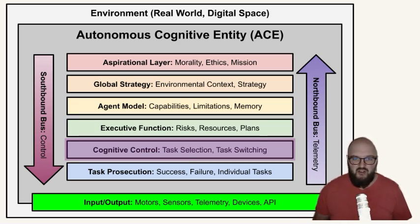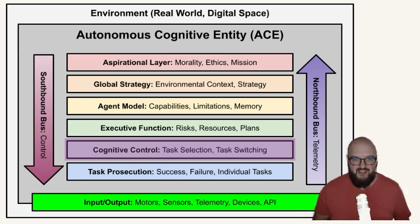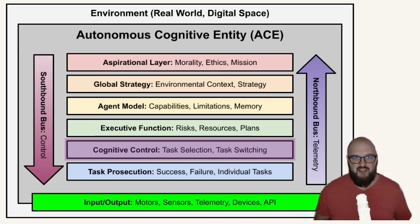Then we have cognitive control: task selection and task switching. Task selection is fairly straightforward — you've built your strategy, you know what you can do, you have your plan, so what are the specific tasks to achieve the mission? Task switching is the more interesting one: how do you know when to give up on a task because it's not working or it's too risky? We've seen AIs playing games that find ways to cheat to maximize points but aren't actually playing properly — task switching prevents getting stuck like that.